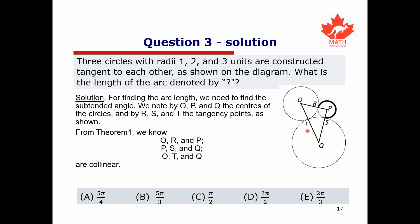From our theorem, the points O, R, P are collinear; the points P, S, Q are collinear; and the points O, T, Q are collinear. So the distance OP equals the radius of the large circle plus the radius of the smaller circle, which is 2 plus 1 equals 3 units. Similarly, the distance PQ is 1 plus 3 equals 4 units, and the distance OQ is 2 plus 3 equals 5 units.